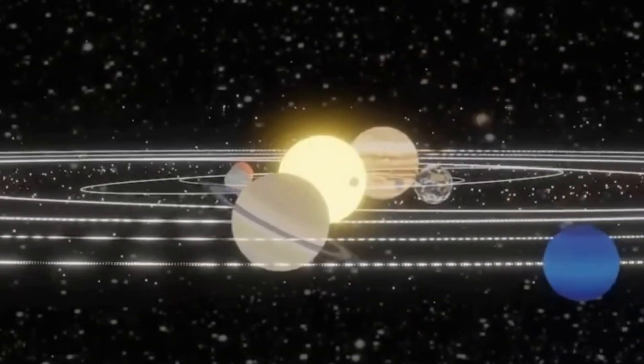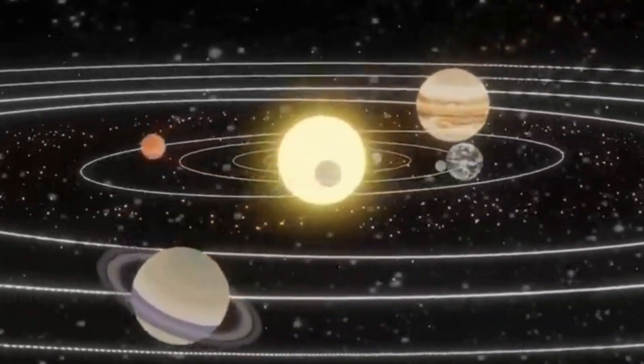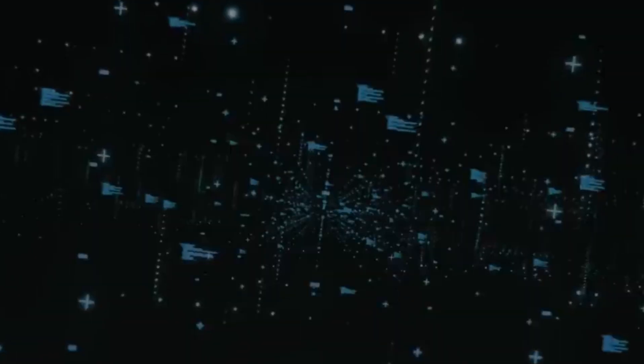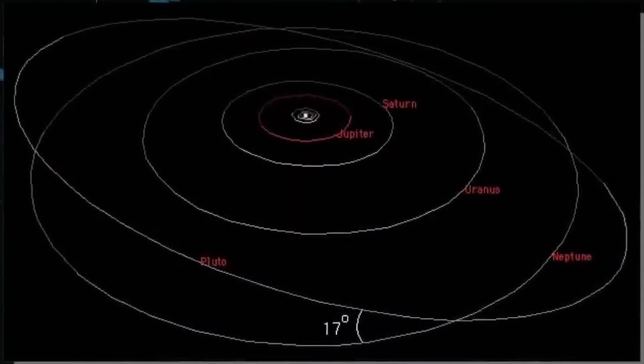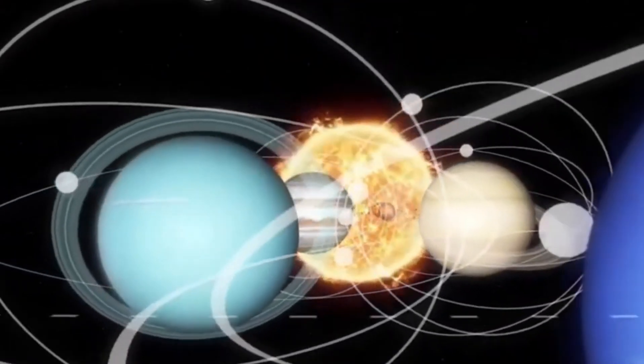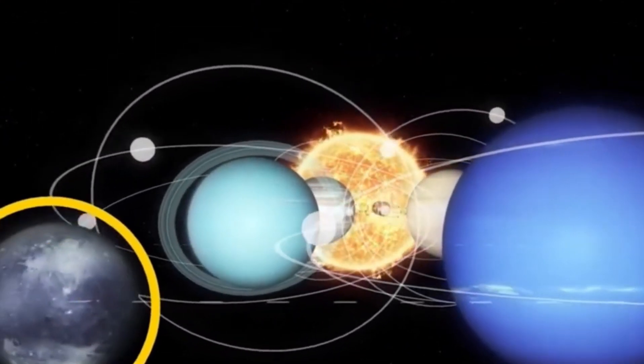Recent computer tests have helped us understand how the big planets like Neptune, Jupiter, and Saturn affect Pluto's path around the Sun. Neptune has a special connection with Pluto, where for every two rounds Pluto makes around the Sun, Neptune makes three. This connection helps keep Pluto's path steady. But Neptune isn't the only one helping.